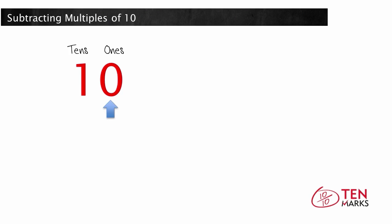Multiples of 10 also have a zero in the ones place. For example, 20, 40, 60, 70, 80, and 90 are all multiples of 10.